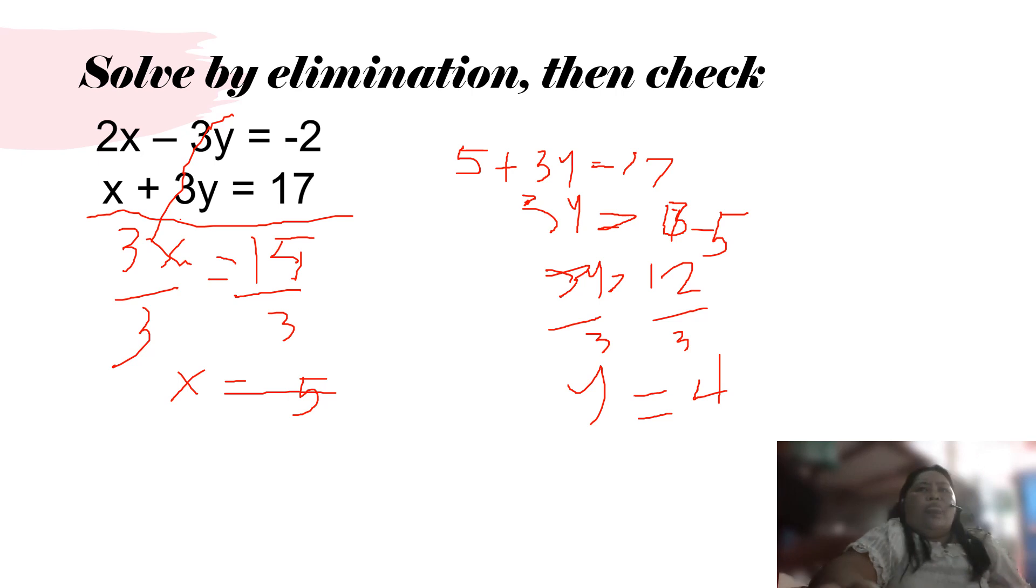You can check out your solution. For example, your x is 5. So in equation 2, 5 plus 3 times 4 equals 12. 12 plus 5 equals 17. In the second equation, if you try it, 2 times 5 is 10, minus 3 times 4 is 12, so it's negative 2. It's correct for equation 1.